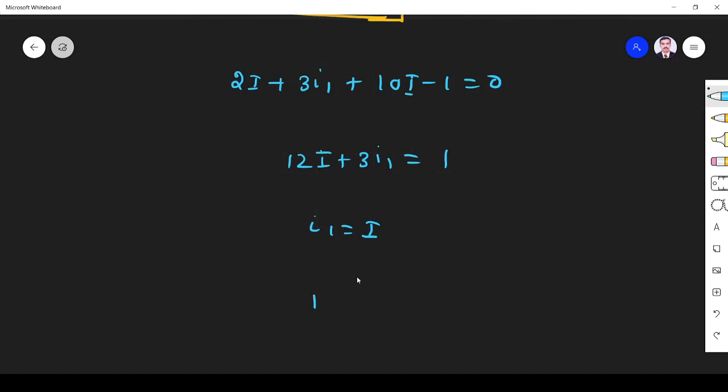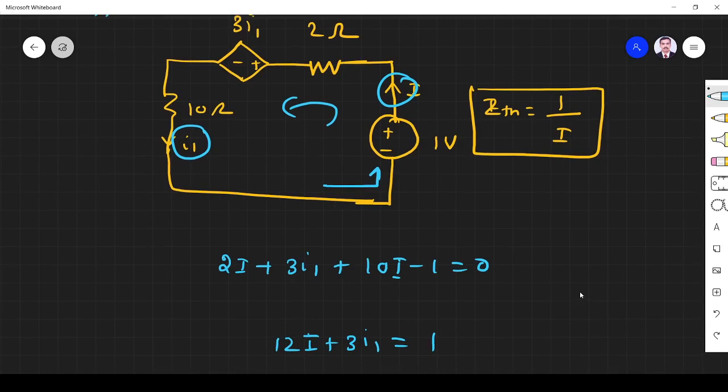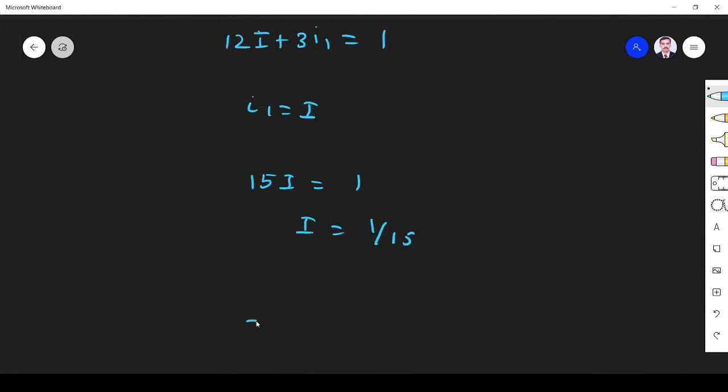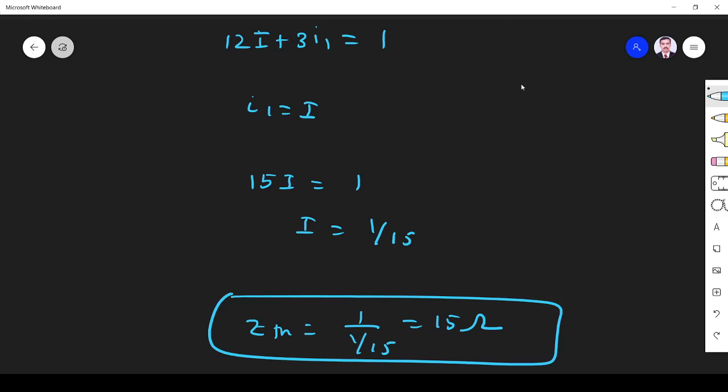So 12i plus 3i equals 15i, which equals 1. Therefore i equals 1 by 15. I told what is Zthevenin - 1 by i. So Zthevenin is 15 ohms.